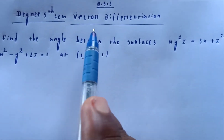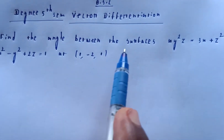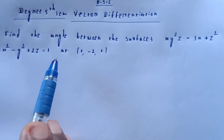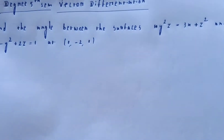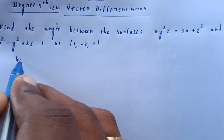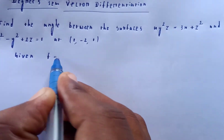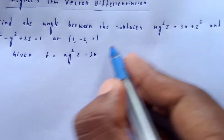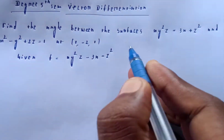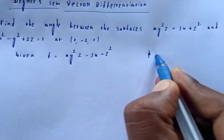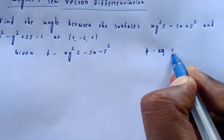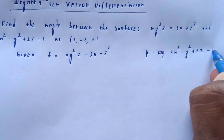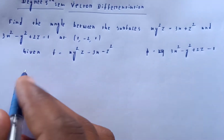Welcome to my channel. BSc degree, vector differentiation. Find the angle between the surfaces: F1 is xy²z = 3x + z², and F2 is 3x² - y² + 2z = 1, at the point (1, -2, 1). Given F1, we set it as xy²z - 3x - z² = 0, and F2 as 3x² - y² + 2z - 1 = 0.